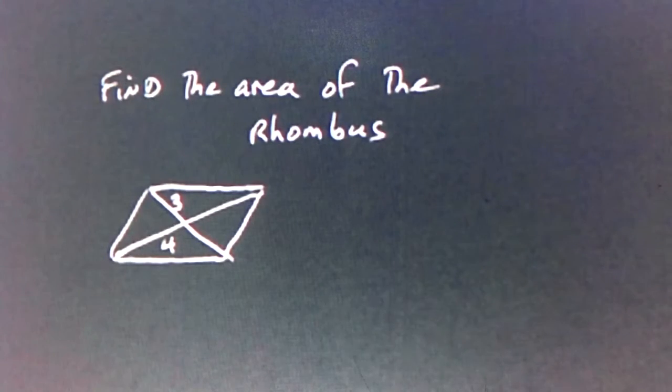So in this case, there's a rhombus, and you're given a couple bits of information about the diagonals, and then you have to find the area of this rhombus.